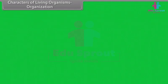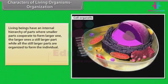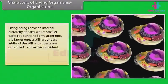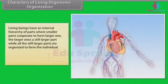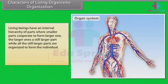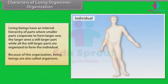Organization: Living beings have an internal hierarchy of parts where smaller parts cooperate to form larger ones. The larger ones form still larger parts while all the parts are organized to form the individual. Because of this organization, living beings are also called organisms.